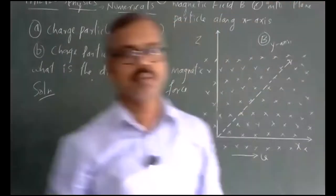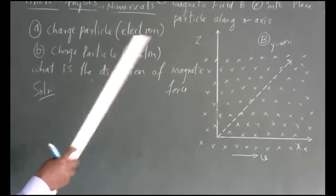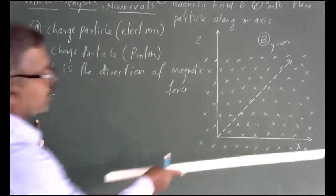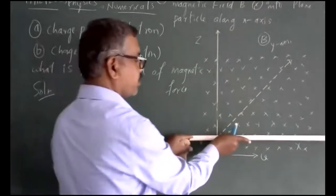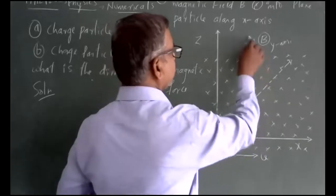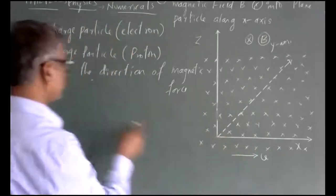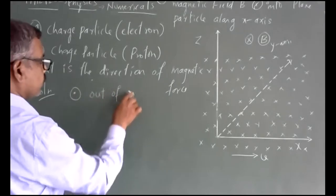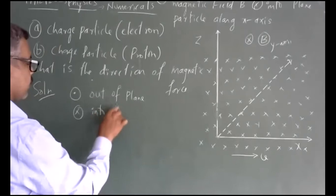This is the second worked example. The question asks for the direction of the magnetic force when a particle moves along the x-axis — first for an electron, then for a proton. We set up the coordinate system: x-axis and z-axis are in the plane of the board, while the positive y-axis is into the board (represented by a cross). If it comes out of the board, it is a dot.